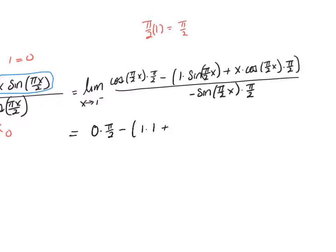In the denominator, I get negative — then sine(π/2) is 1, multiplied by π/2. So what I end up with is π/2 minus 0, over negative π/2.